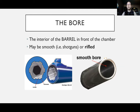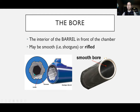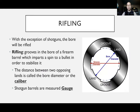The bore is the interior of the barrel in front of the chamber. It can be smooth, as with shotguns, or rifled in the case of handguns or rifles. Rifling consists of lands and grooves inside the bore of a firearm barrel that impart a spin to the bullet, which helps stabilize it while it's in flight.